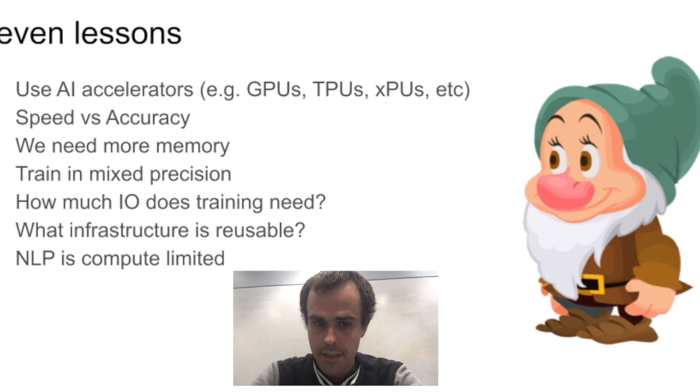Let's briefly go over the seven insights. The first one is to use AI accelerators. Use computers that are good at machine learning.